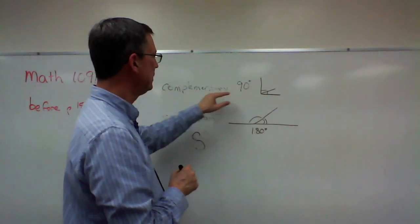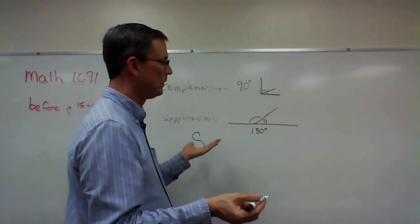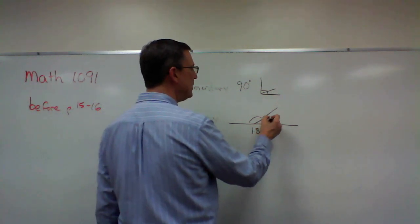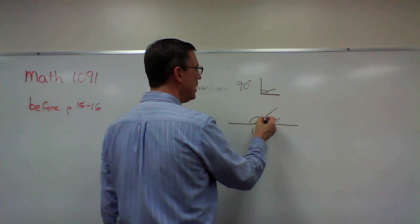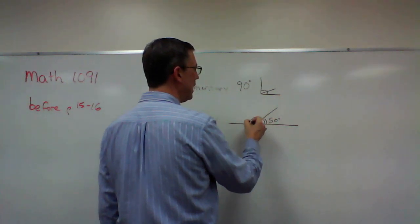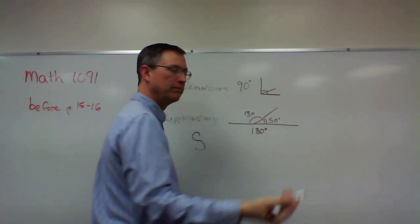Supplementary is double the 90, so 90 is complementary, 180 supplementary. If I know that this angle here, for instance, is 50 degrees, then I can easily subtract and know that this has to be 130.